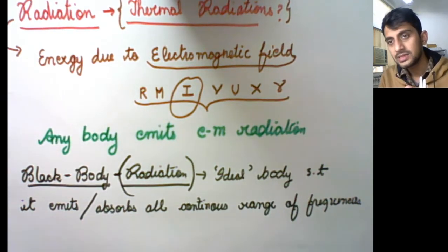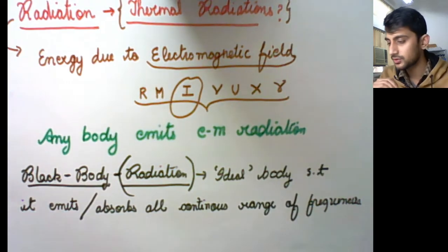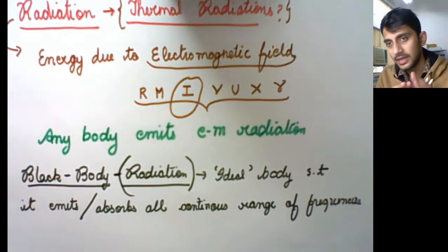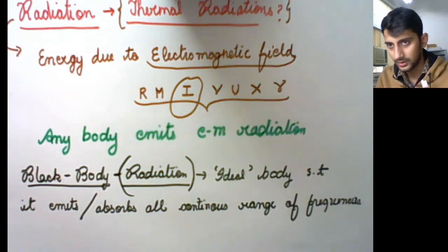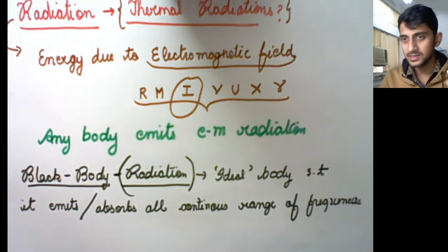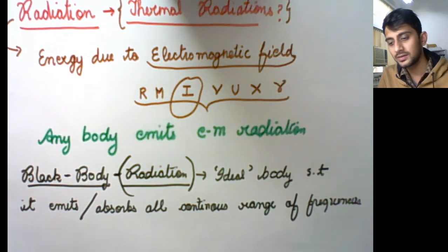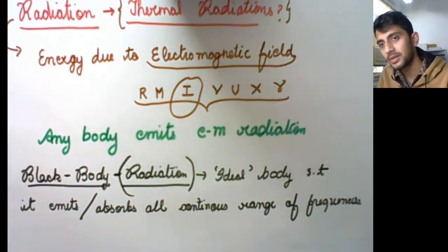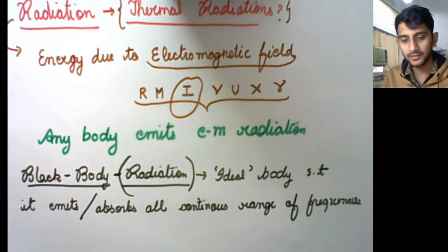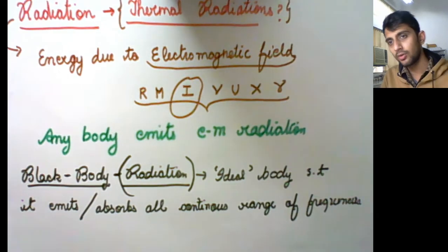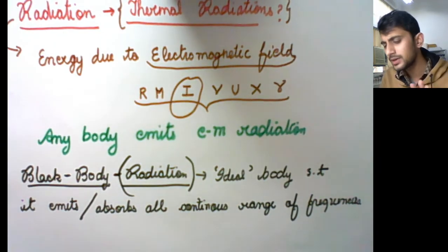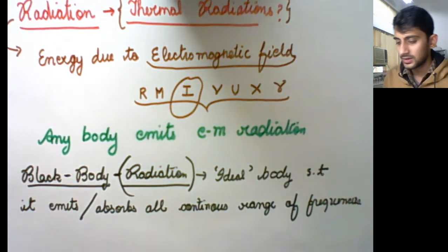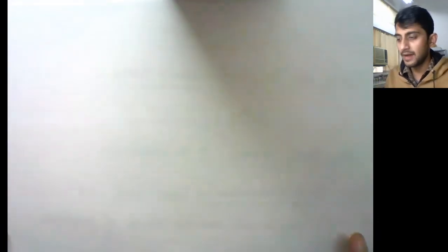The frequency at which power is emitted depends on the temperature of the body. This leads to the concept of black body radiation. You plot the spectral density — energy radiated per unit time, per unit area, per unit solid angle for a particular frequency — over the entire range of frequencies, and that curve is called the black body radiation curve.